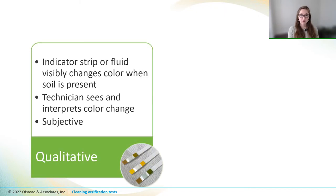Which biochemical test to use depends on the type of results that you want. Qualitative tests involve indicator strips or fluid in a vial that changes color when soil is present. The tech sees and interprets that color change, which can depend on the tech as well as lighting in the room. And that's why it's called qualitative. They're looking at a visible quality, and it's subject to interpretation.